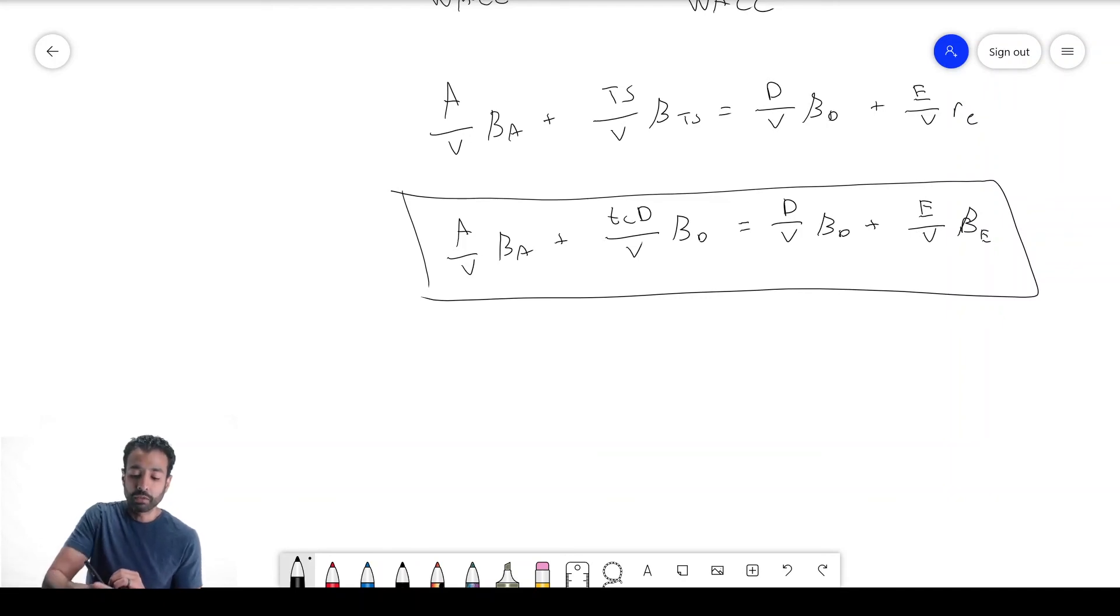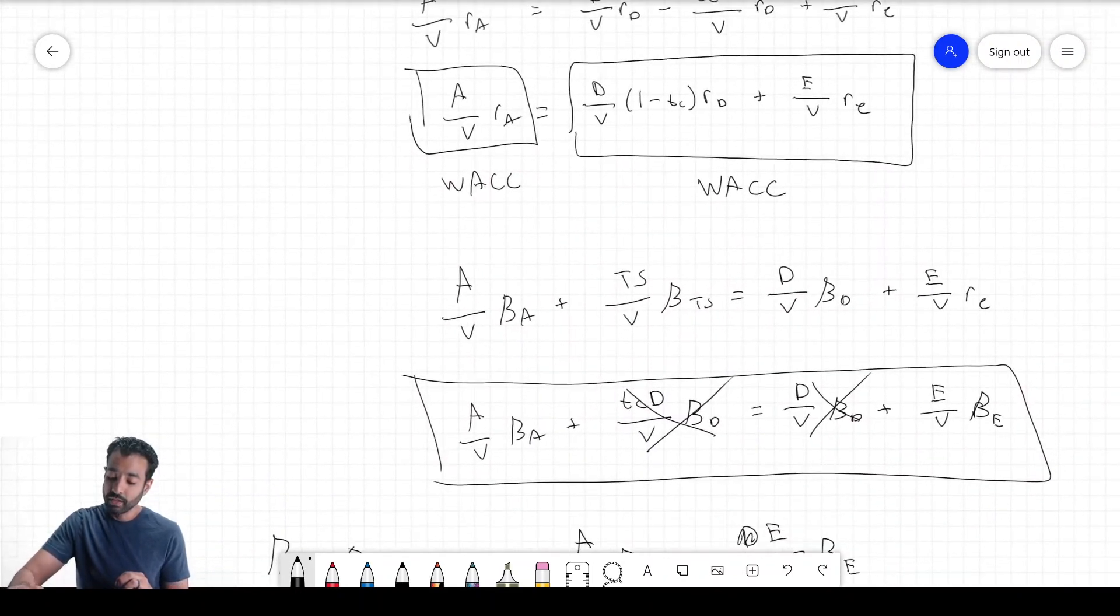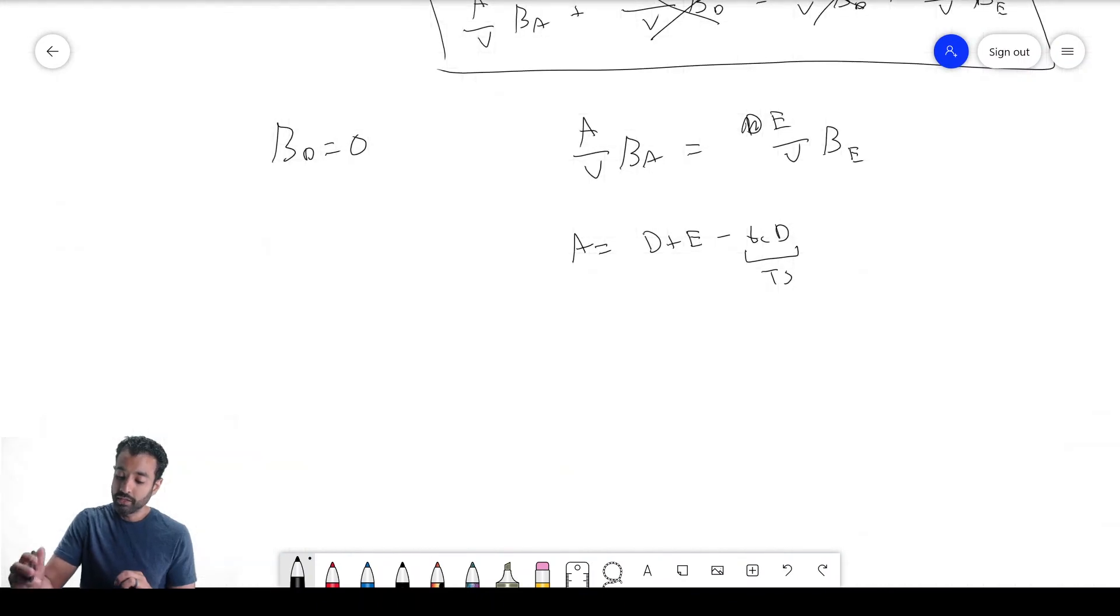For example, one assumption people often make is that the debt beta is zero—it's not risky. It's not 100% right, but it helps us teach the concept. That means these terms go, and you have A over V times beta A equals E over V times beta E. You can simplify this more because assets equals D plus E minus TCD—this is tax shields, coming from the formula. If I wanted to solve for A, it's D plus E minus TS. We can see that A equals D times (1 minus TC) plus E.